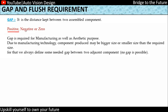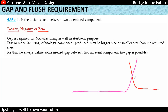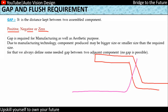The gap can be positive, negative, or zero. Suppose we have two components — when we model a particular part, there will always be a gap condition we need to maintain. For parts A and B, we need to keep some gap between them.